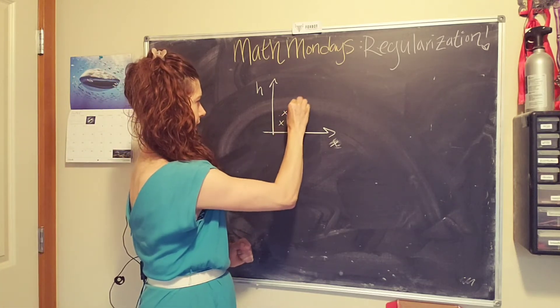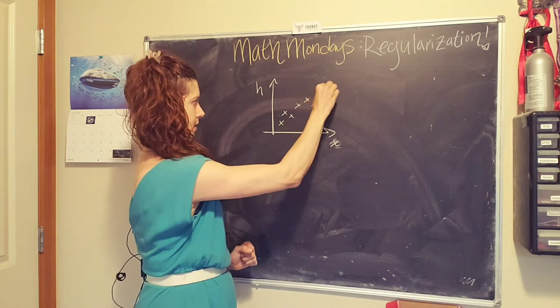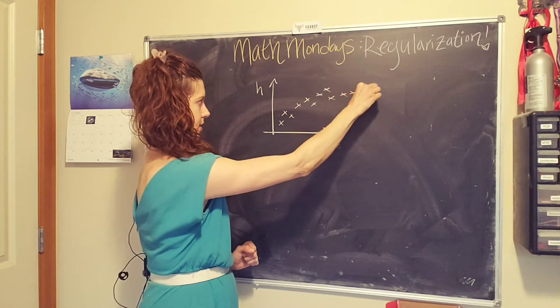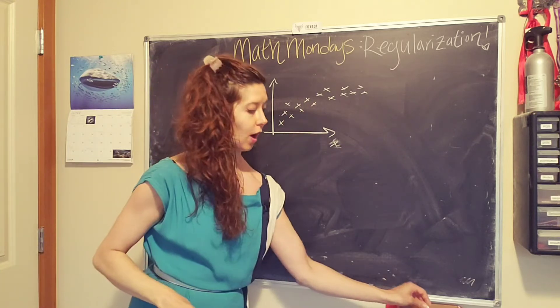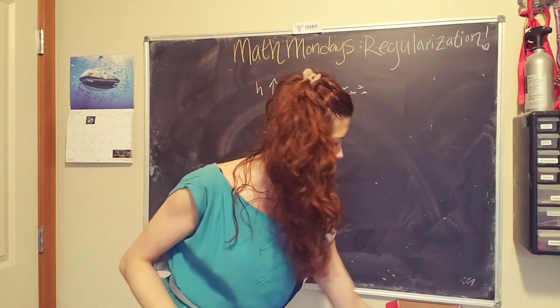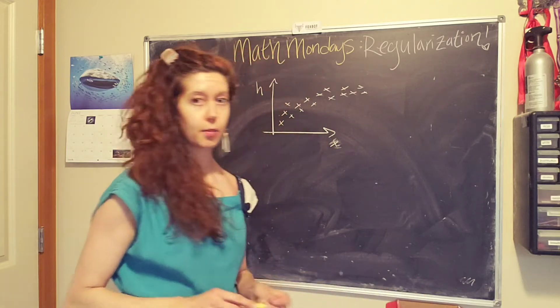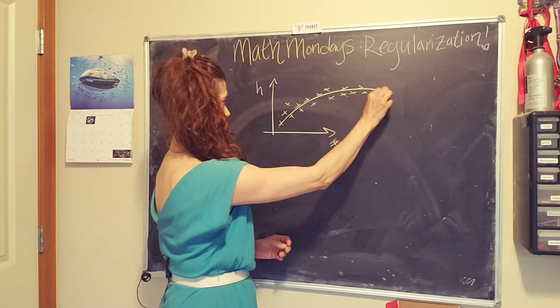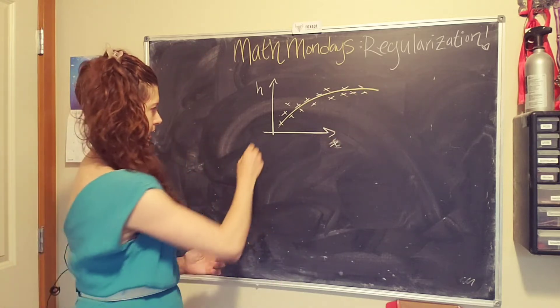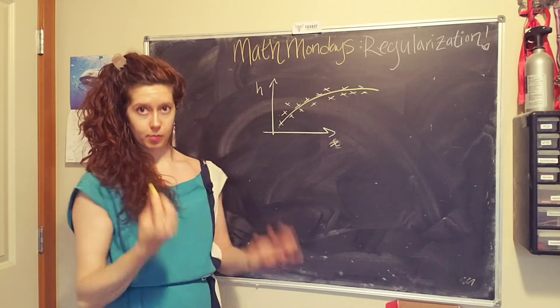We get some data that looks like this. Okay cool, so our intuition tells us that our data probably looks something like this and we might propose a hypothesis function.